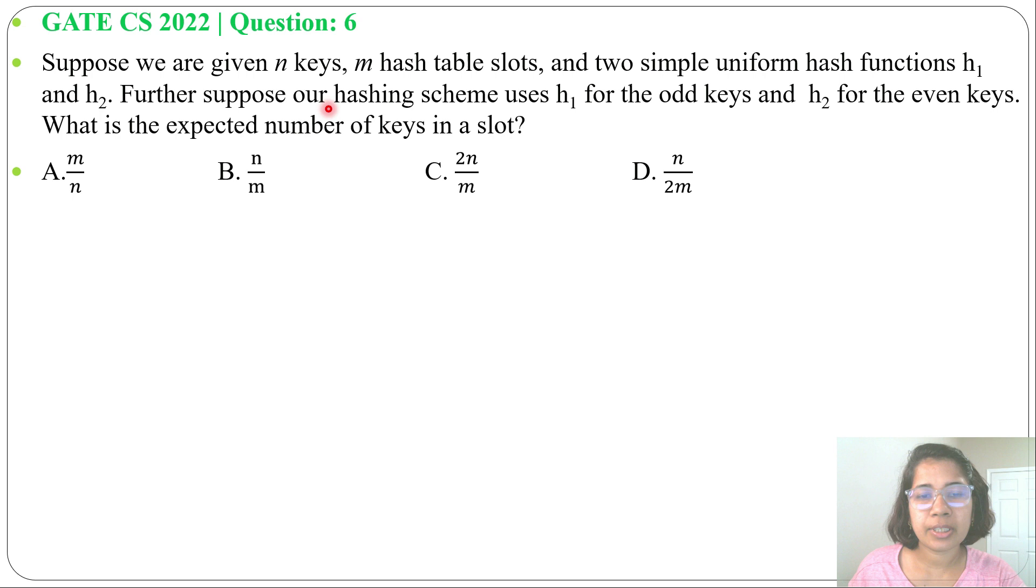and h2. Further suppose our hashing scheme uses h1 for odd keys and h2 for even keys. What is the expected number of keys in a slot? Four options are given. Here, h1 is for odd keys